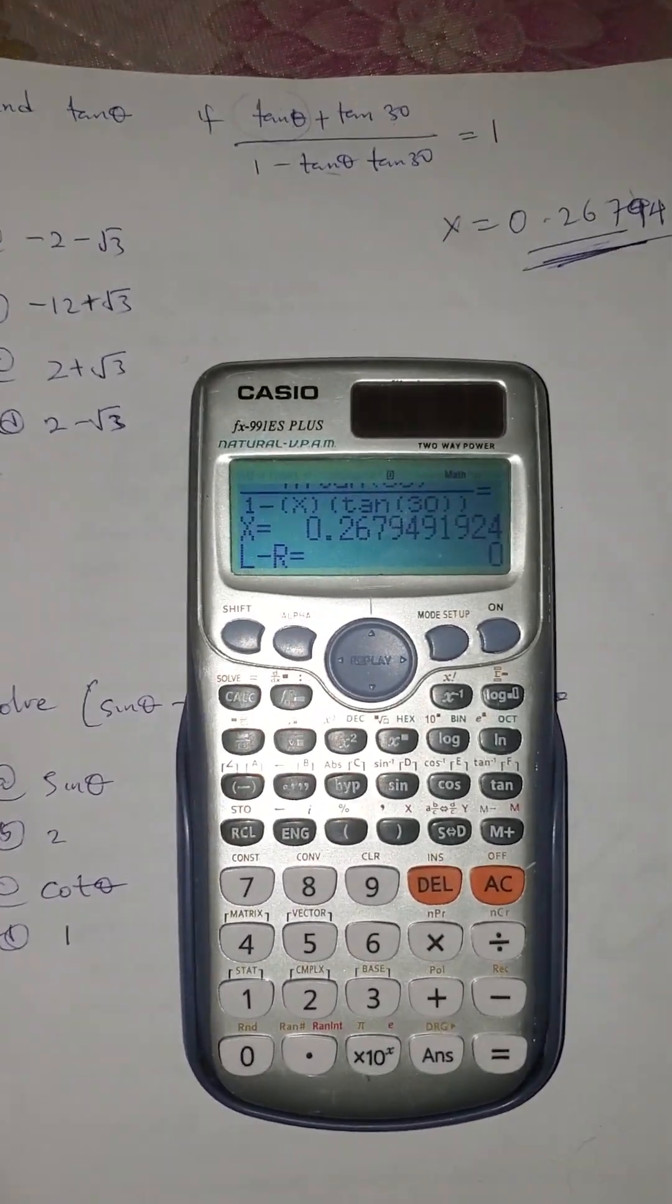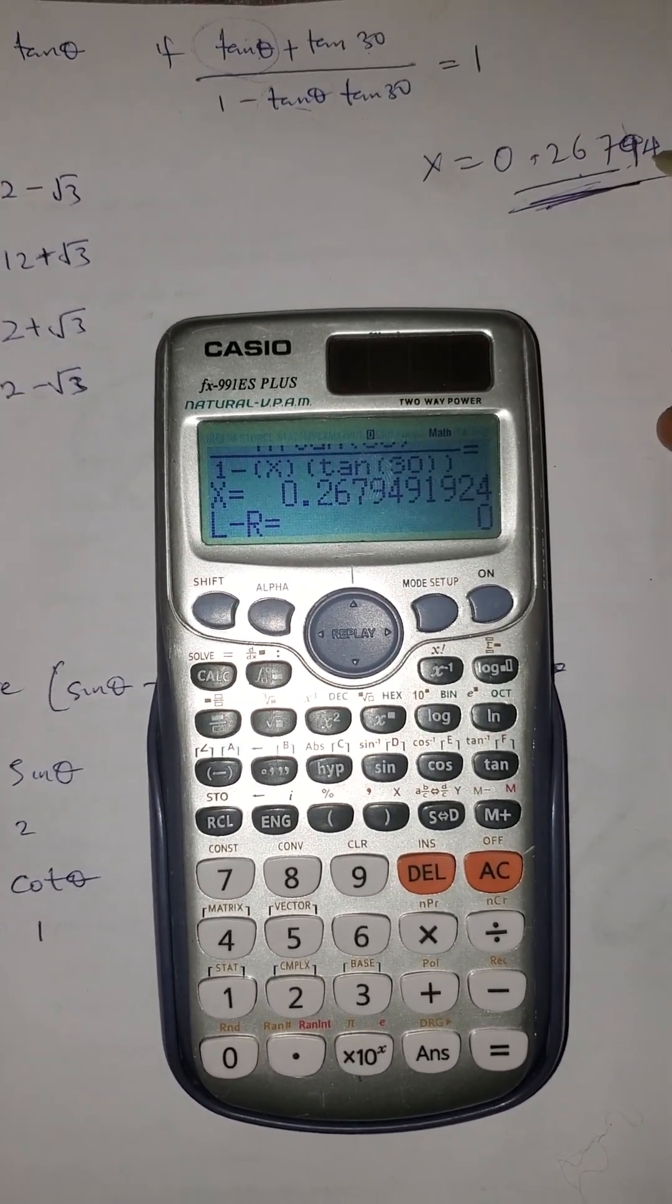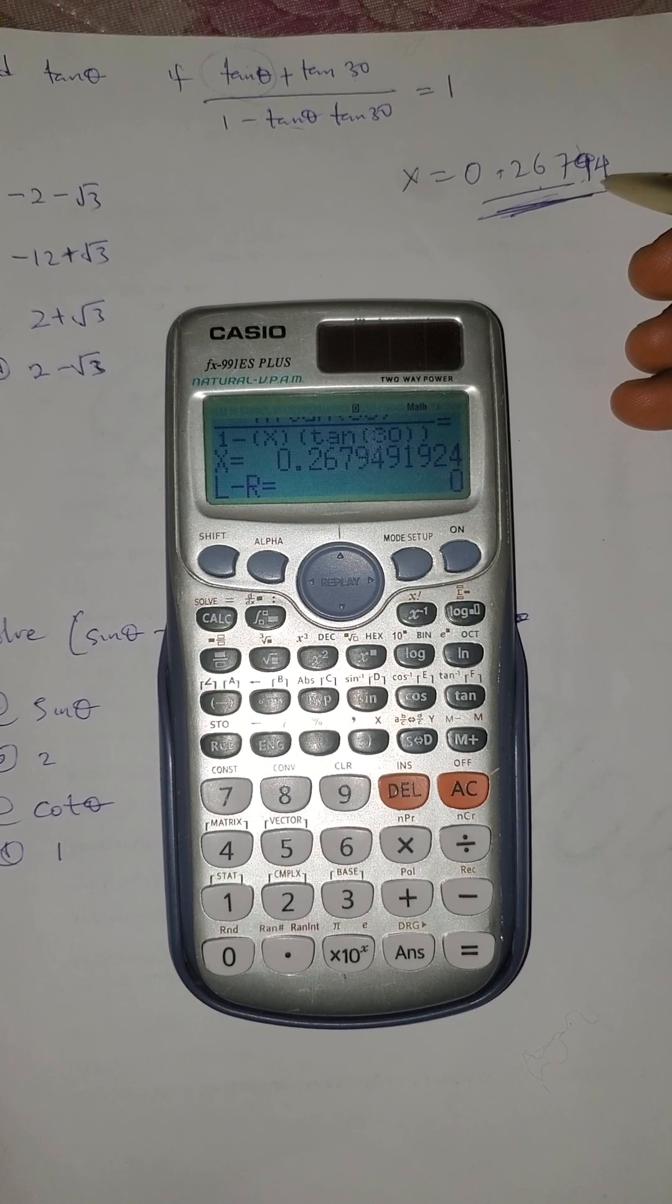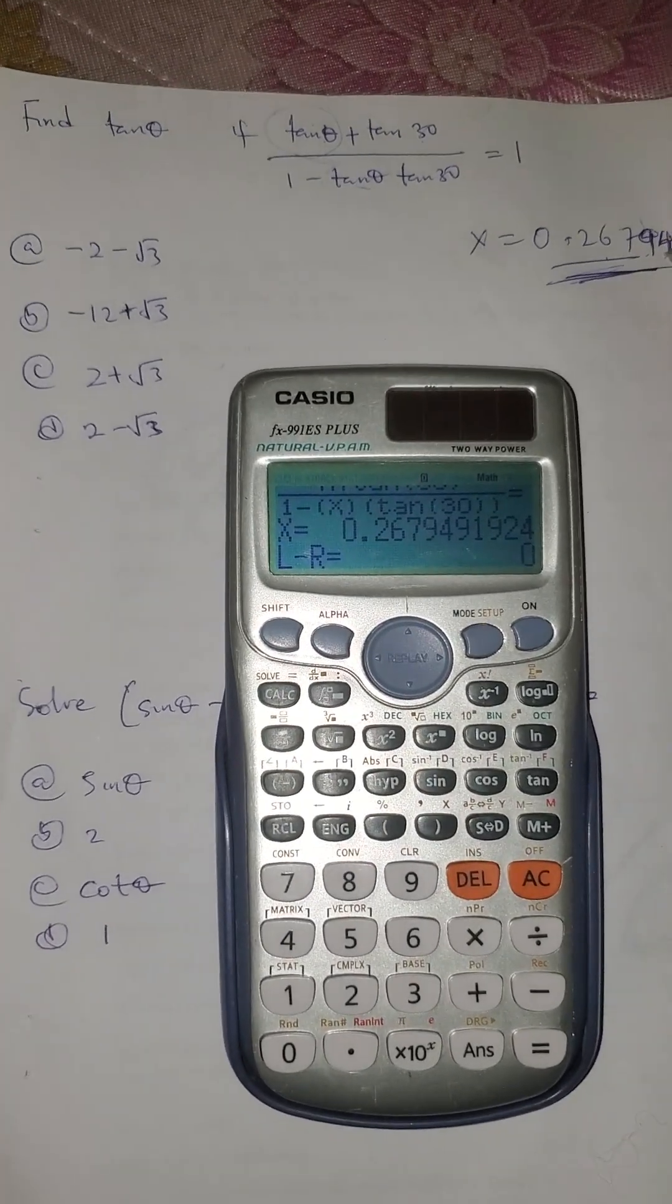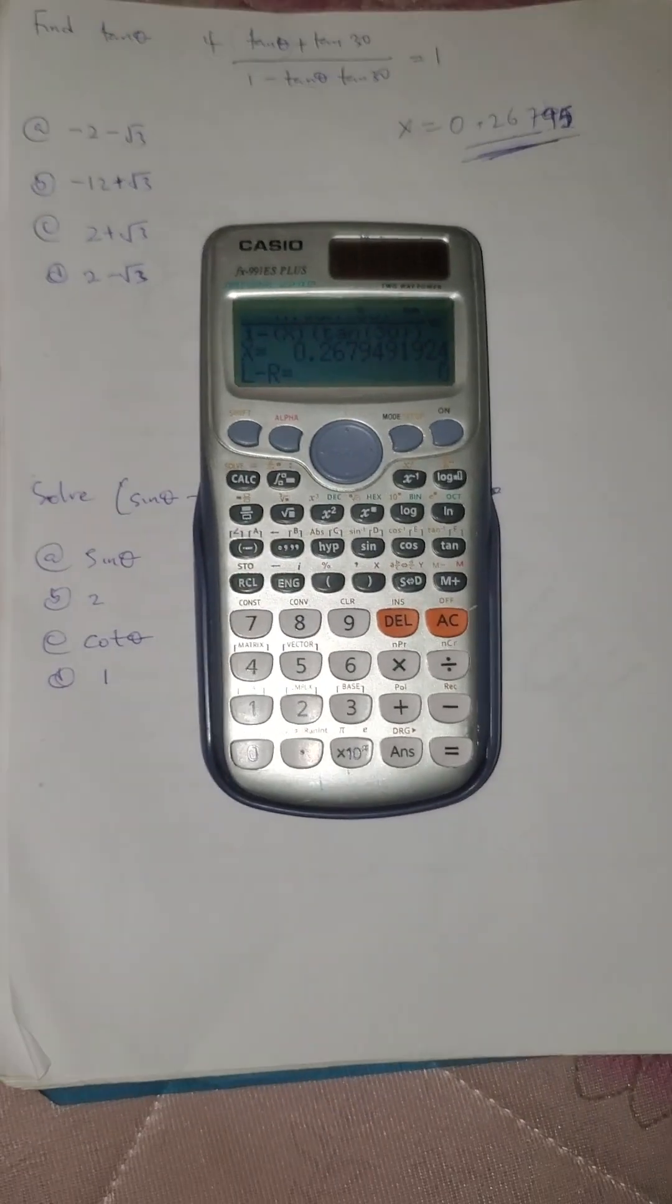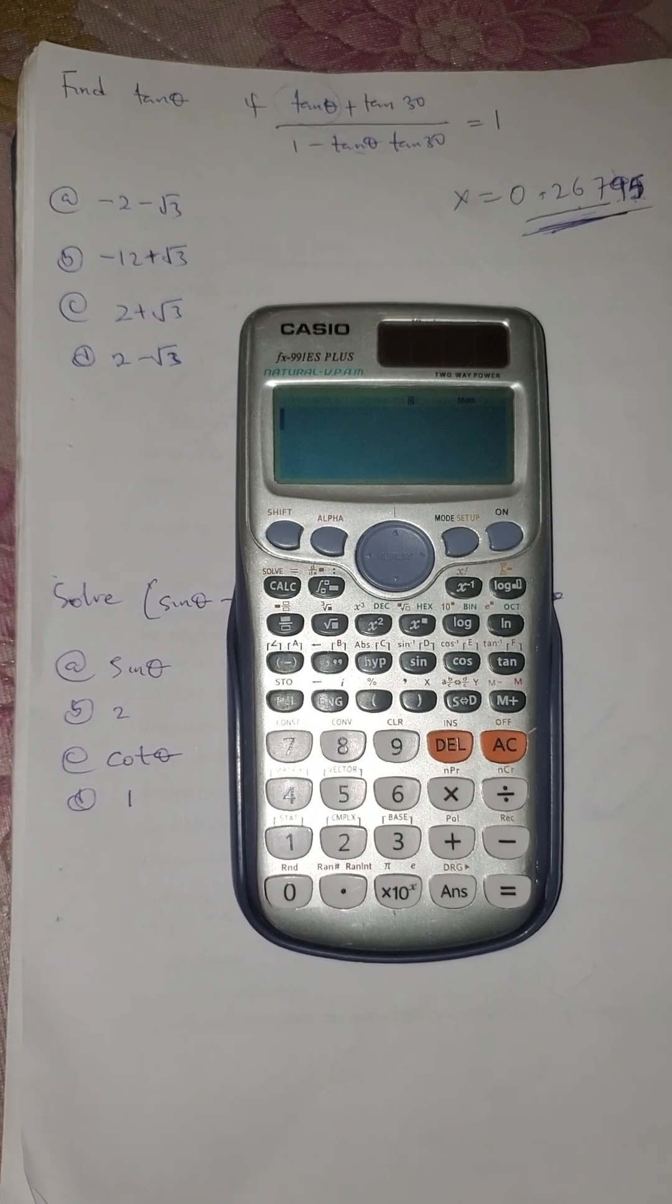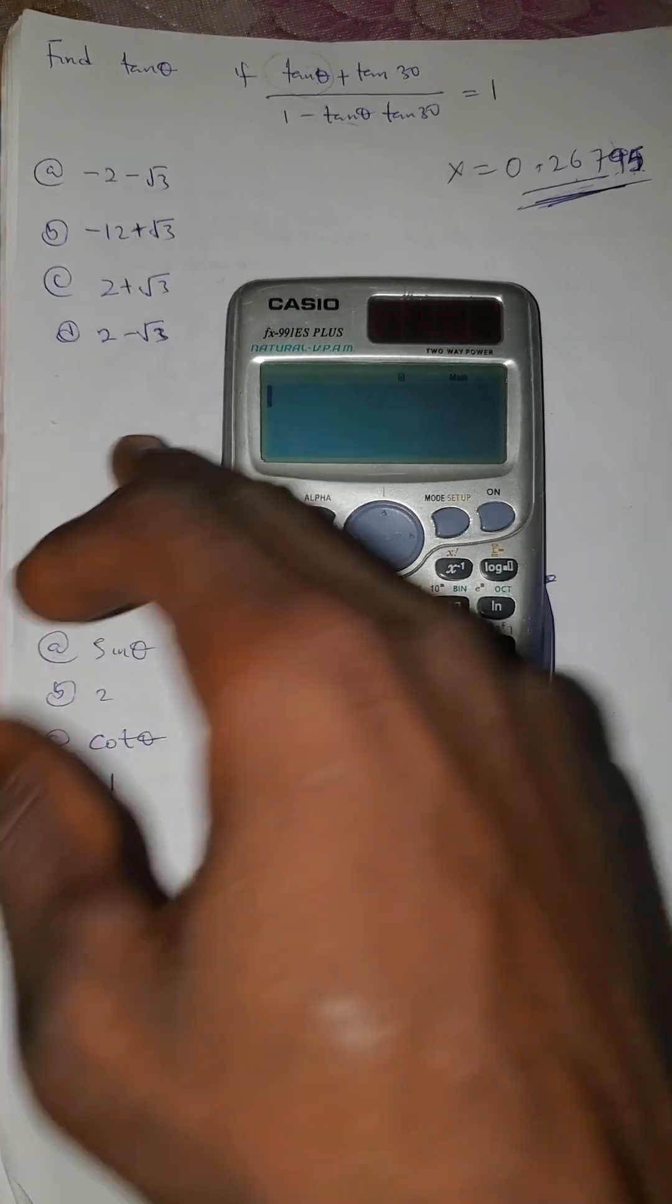When you solve for x, you can see that x gives you 0.26794 or approximately 0.26795. Now we check the options to find which one equals this answer.